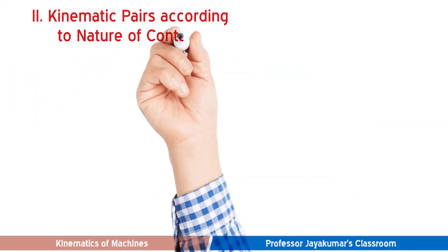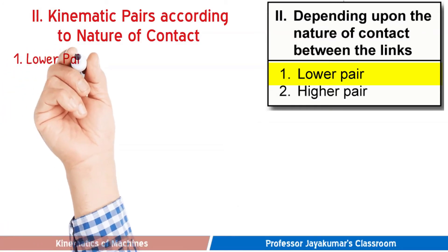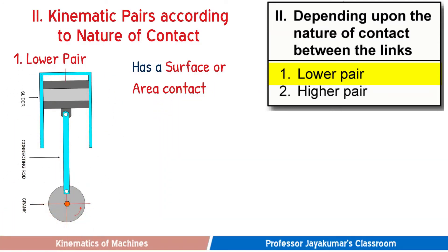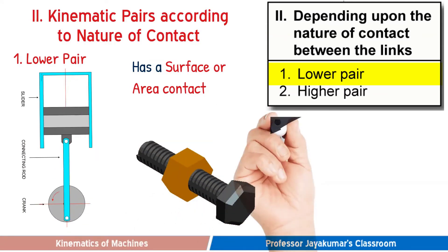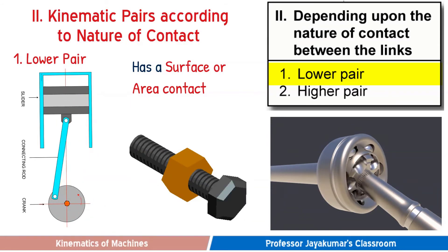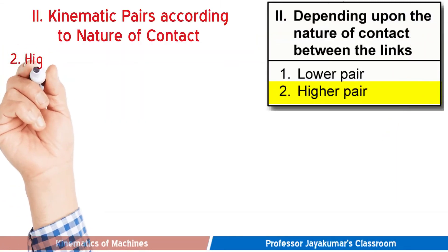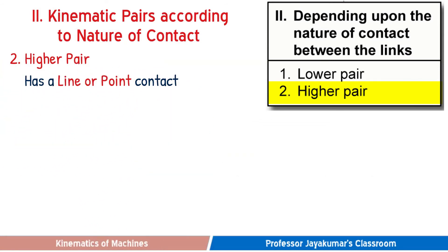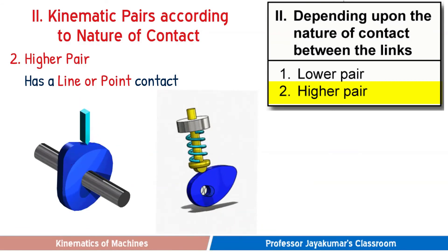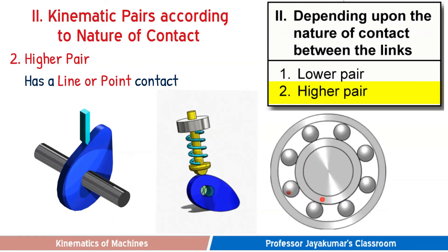Kinematic pairs can also be classified based on the nature of contact between the links as lower pair and higher pair. If a kinematic pair in motion has surface or area contact between the two links, it is called a lower pair. The piston has surface contact with the cylinder, the nut has surface contact with the bolt, and a spherical joint has surface contact — all are typical examples of lower pairs. In a higher pair, two links have either line or point contact: cam and knife-edge follower, and cam and roller follower have line contact, while ball bearings have point contact, forming a higher pair.